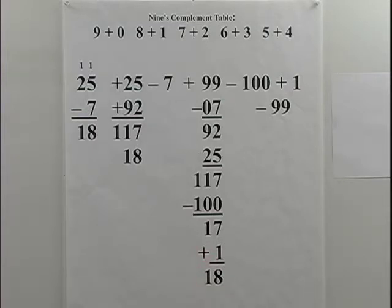So in the 9's complement procedure, I will take the 9's complement of 07, which is 92, put it over here, and I'm going to add it to the minuend. When I do that, I get the same number, 117, same as here.